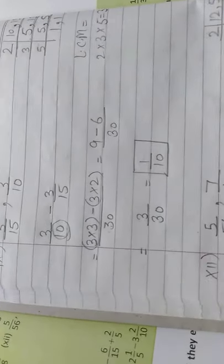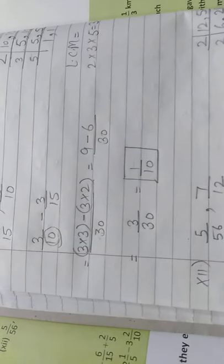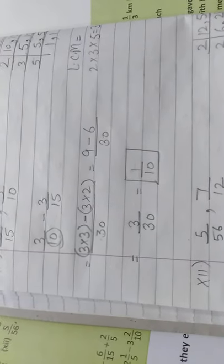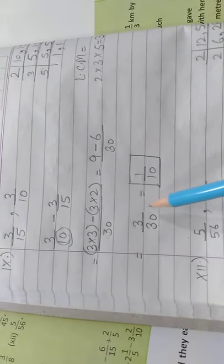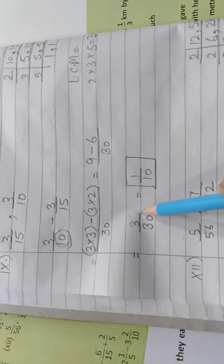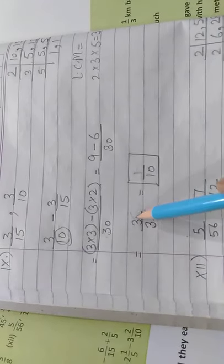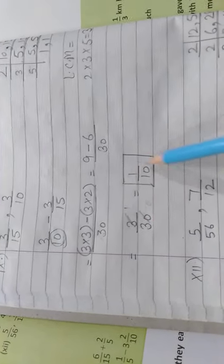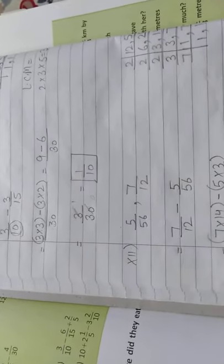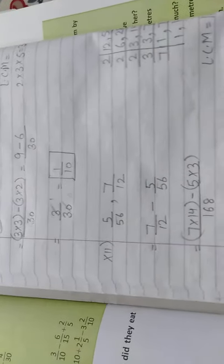Now we can simplify 3/30 to its lowest form. We divide both numerator and denominator by 3: 3 divided by 3 is 1, and 30 divided by 3 is 10. So the simplified answer is 1/10.